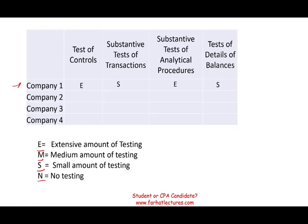Company two has few internal controls and few inherent risks — not as strong as company one. So we test controls at a medium level. As a result, we rely more on substantive test of transaction, which is now medium rather than small. Analytical procedures we can still do extensively. For test of detail balances, we also do a medium level. This may represent a private, small-sized company with some controls but requiring more substantive work.